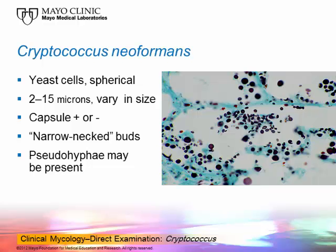Cryptococcus neoformans has a hallmark of producing cells that vary in size, anywhere from 2 to 15 microns, and with Cryptococcus gattii the cells can be as large as 60 microns. The cells, generally as a rule, are nice and round — spherical. They may or may not have a capsule. The buds, if present, have narrow necks. Pseudohyphae may also be found with some of these cells. The size variation is apparent and is a hallmark of identifying Cryptococcus neoformans, along with the budding cells that have narrow necks.